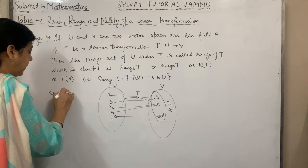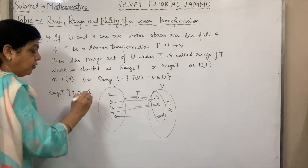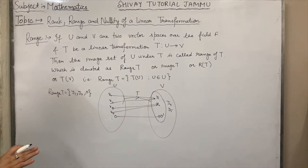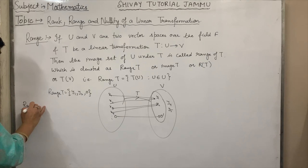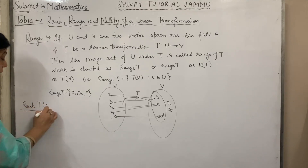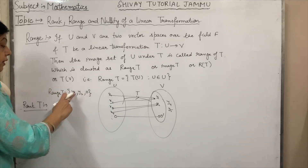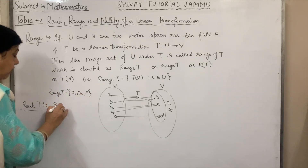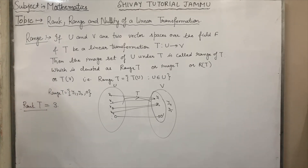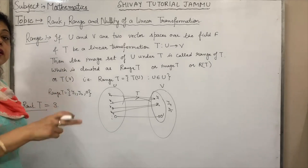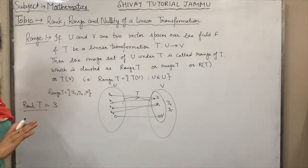These three elements are known as range of T, and it is denoted as range of T. Range of T means transformation of elements of U, where U belongs to U. So these three elements are known as range of T, which is only Y1, Y2, and the zero element in this example. Number of elements present in range of T is known as rank of T. There are three elements, so rank of T is three.